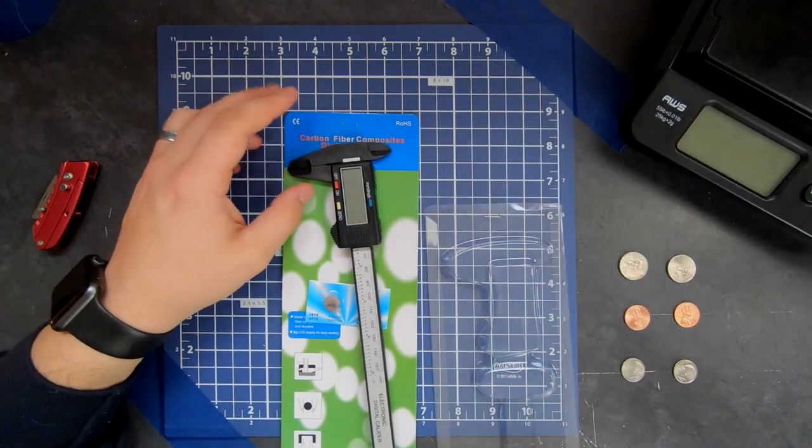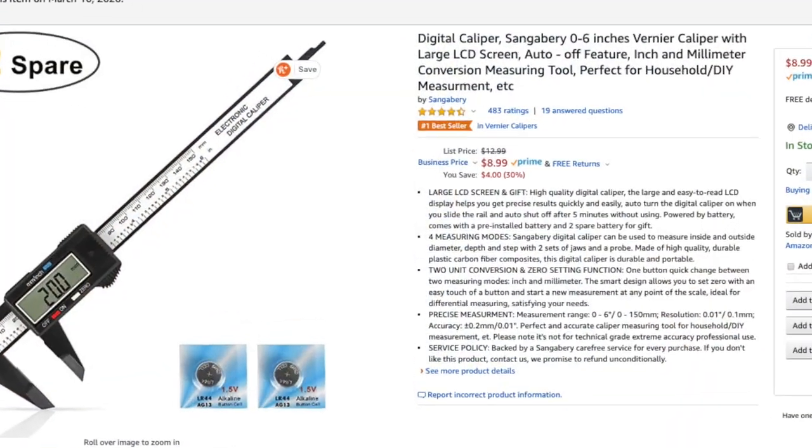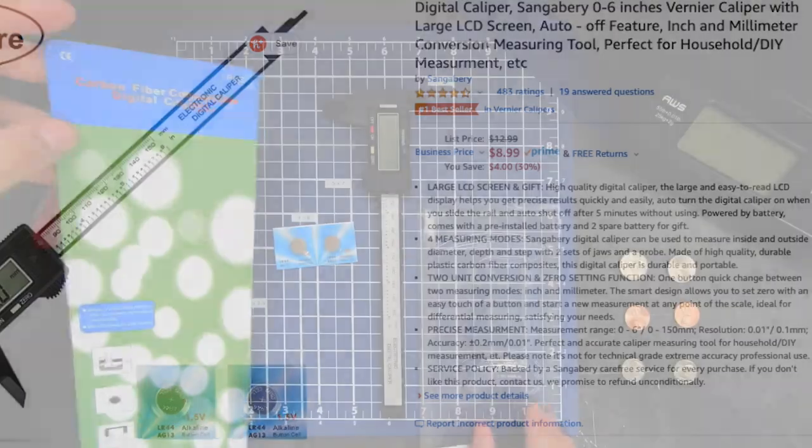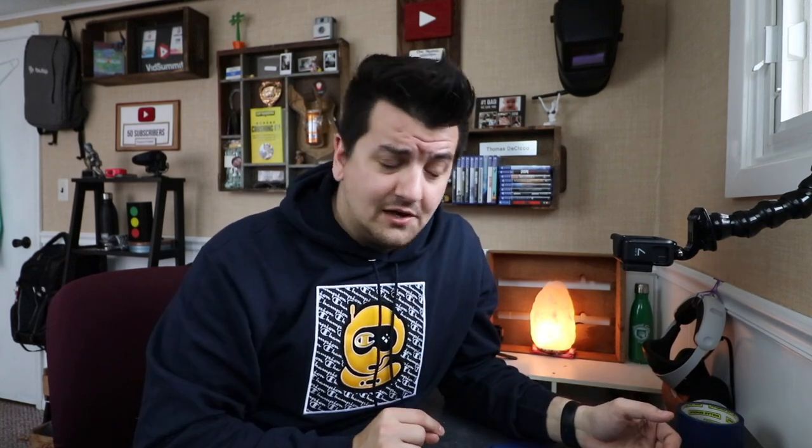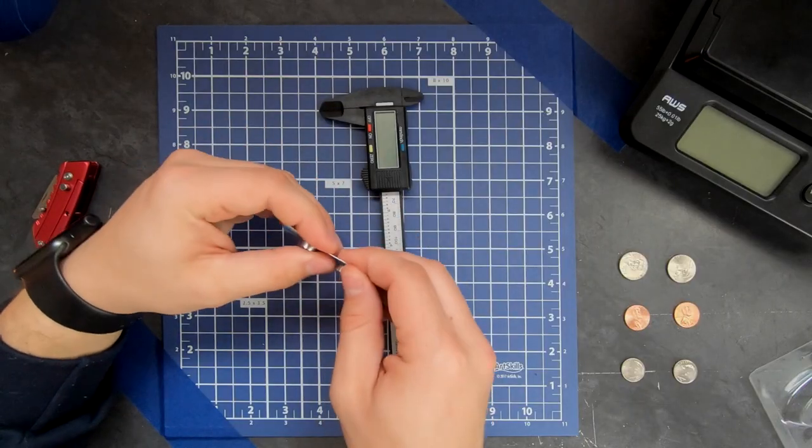So I picked up this particular caliper on Amazon for just under $10. If you guys are interested in looking at or purchasing this guy, I'll make sure to throw Amazon affiliate links below. So it comes with two batteries. We'll open these guys up.